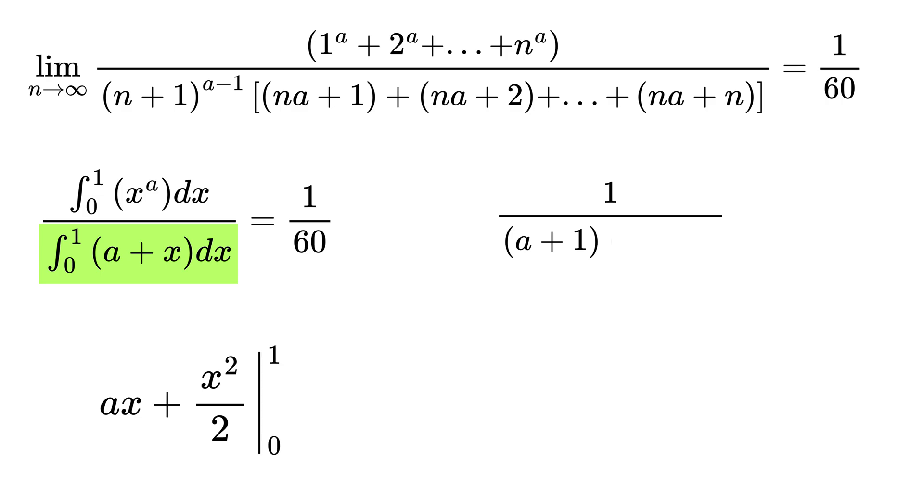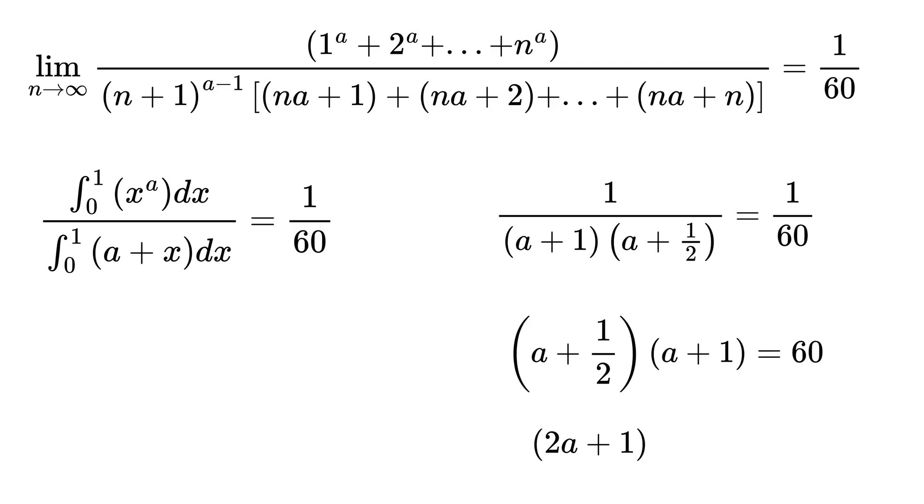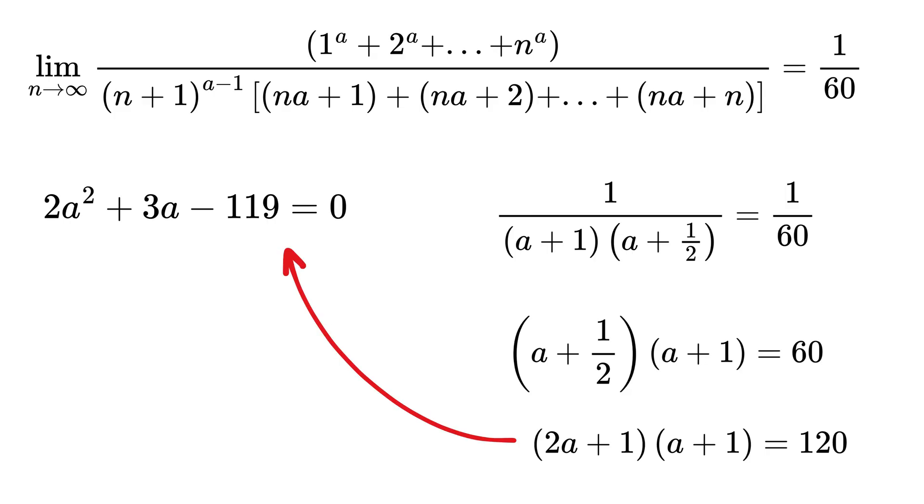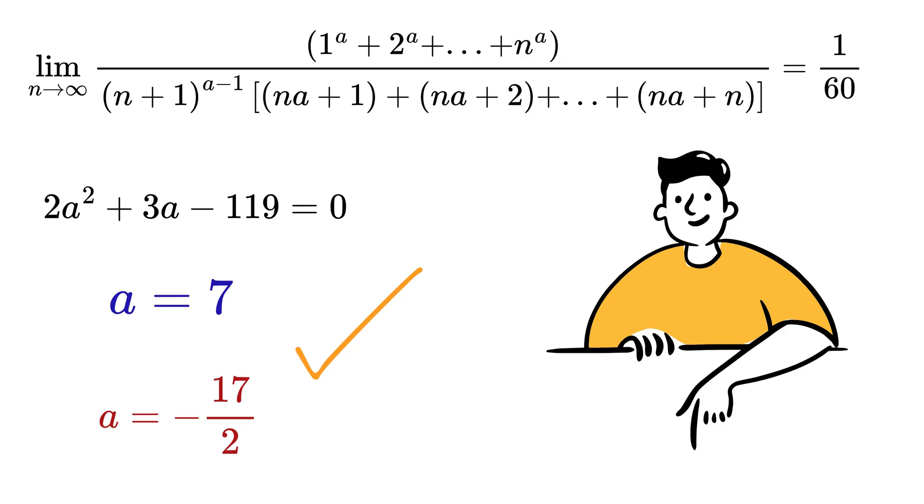So we get (a plus half) times (a plus 1) equals 60, or (2a plus 1) times (a plus 1) equals 120. On expanding we get this quadratic equation: 2a squared plus 3a minus 119 equals 0, and thus the solution is a equals 7 or minus 17 by 2.